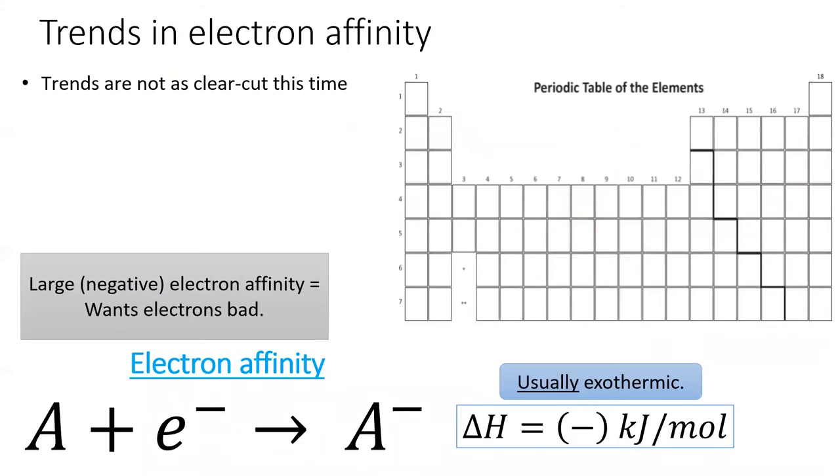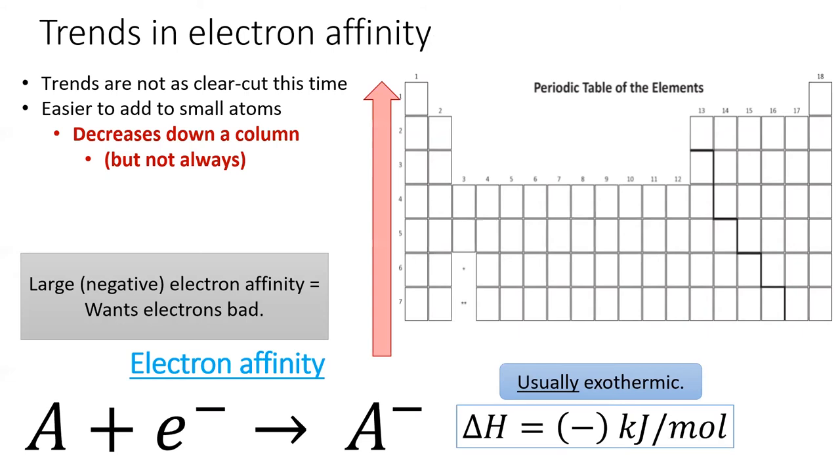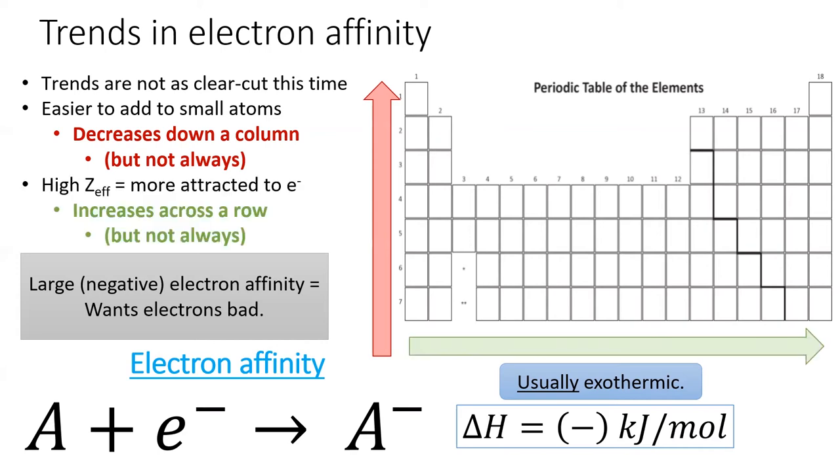We will see that the trend for electron affinity is not as clear-cut as the periodic trends for size or ionization energy. In general, electron affinity decreases down a column, though there are many exceptions. Electron affinity also generally increases to the right across a row, but there are many exceptions.